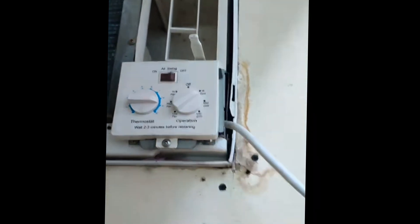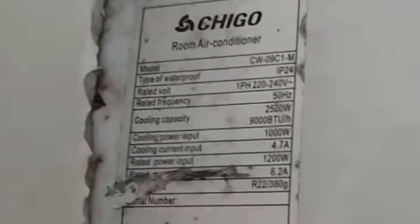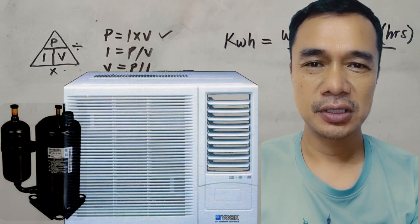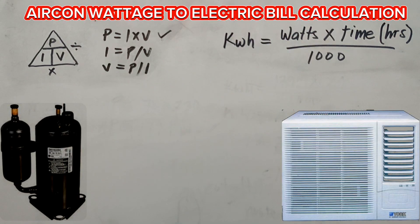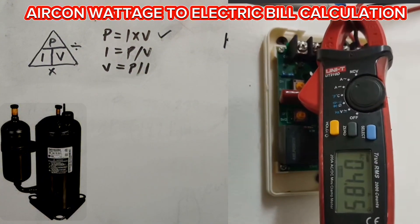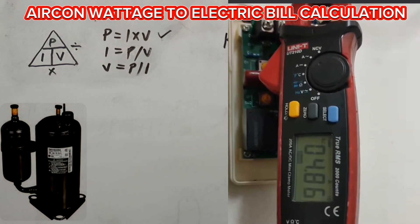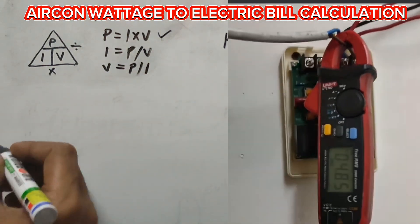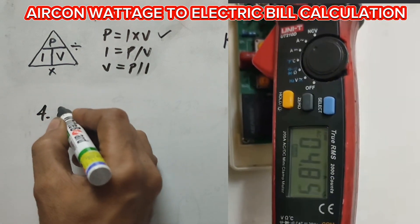Three-fourth turn for the thermostat, and the selector is set to high — we got 4.80 ampere here, and in the level this is 4.7 ampere. Welcome to my YouTube channel! Today we're going to compute the power consumption of a one-horsepower window-type air conditioning unit. This aircon is non-inverter, or conventional. The running ampere for a one horsepower unit in my place is rated 4.8 ampere.